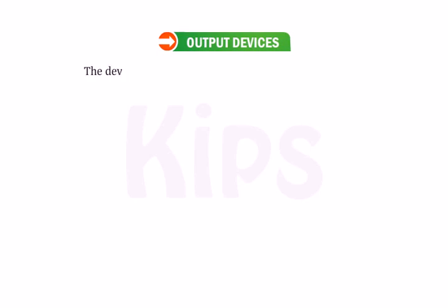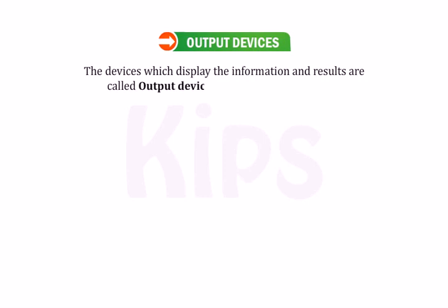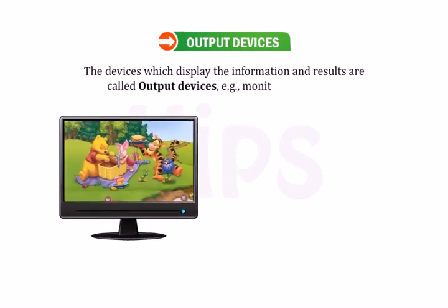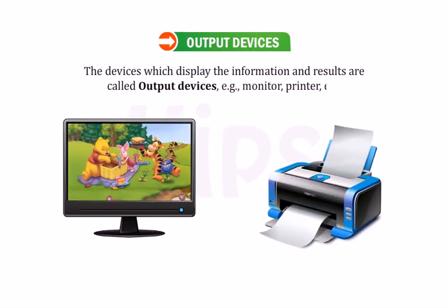Now we shall learn about output devices. The devices which display information and results are called output devices — for example, monitor, printer, etc.